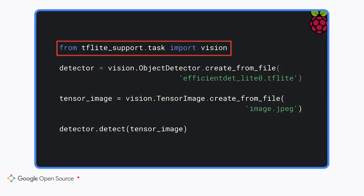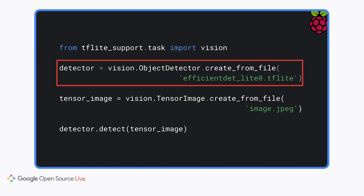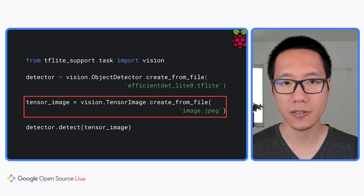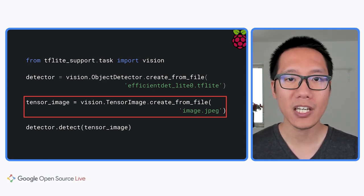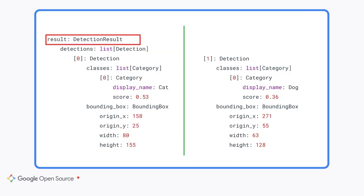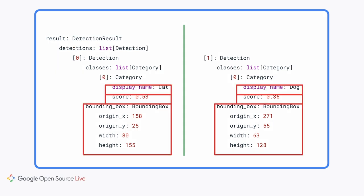Let me show you how to integrate the object detection model into your Python application using the Task Library Python API. In your Python application, start by importing the vision module from the task library. Then initialize an object detector with the TensorFlow Lite model you downloaded from TensorFlow Hub. Now you need to prepare a TensorImage to feed the input image to the object detector. You can load the image directly from a file using the createFromFile function, and then call the detect function on the TensorImage to detect objects. The detect function returns a list of detection objects, each with the object name, confidence score, and bounding box location.